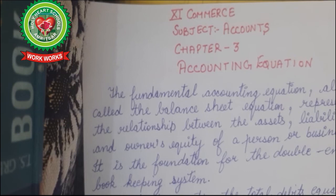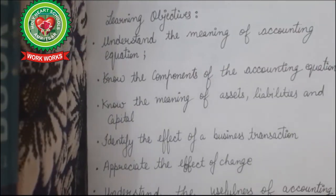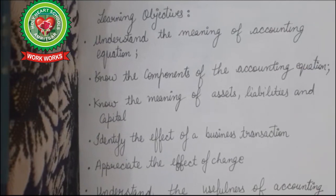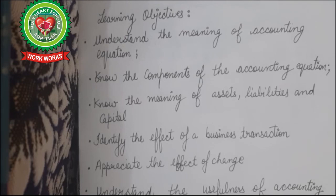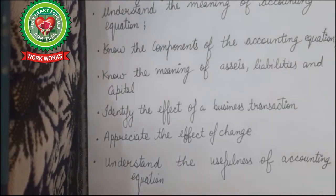The fundamental accounting equation, or balance sheet equation, gives you the relationship between assets, liabilities, and equity. The learning objectives are: to understand the meaning of accounting equation, know its components, know the meaning of assets, liabilities, and capital, identify the effect of business transactions, appreciate the effect of change in one variable on others, understand maintaining balance, find missing variables, and understand the usefulness of the accounting equation.